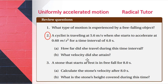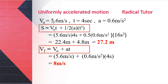How far did she travel during this time interval, and what velocity did she attain? Given: initial velocity is 5.6 meters per second, time is 4 seconds, acceleration is 0.60 meters per second squared. Using s = v₀t + ½at² for distance, and final velocity v = v₀ + at, which gives the final velocity in meters per second.